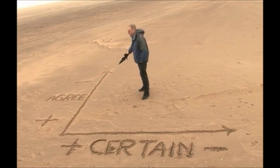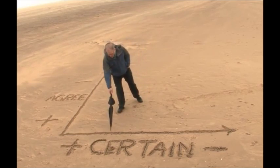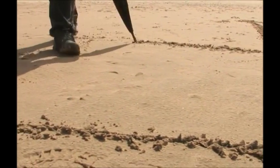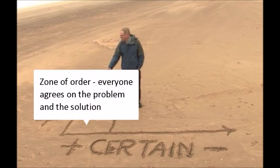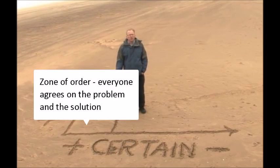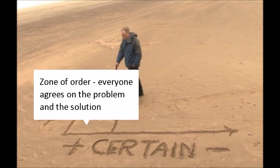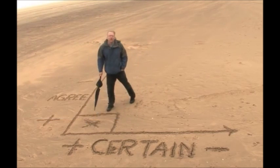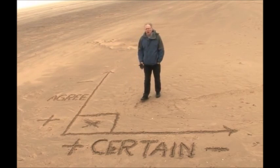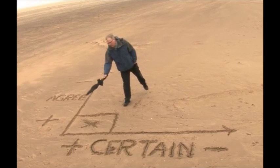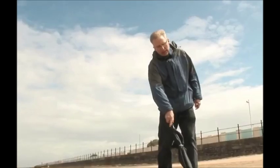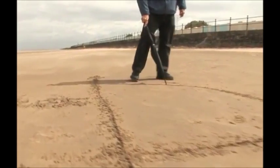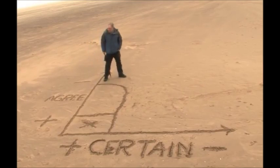Using these two simple axes, you wind up with what we can call the zone of order, or evidence-based policy making, where everybody agrees what the problem is and the experts know how to solve it. A whole variety of areas fall here — this is the zone of traditional evidence-based policy making, where targets and audits work. This is the home of traditional policy making.